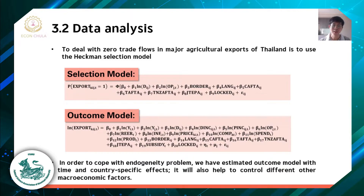This approach involves two steps. The first step, the selection model, is used to identify a set of trade clauses related to the decision of being engaged in export markets. The second step, the outcome model, includes the Inverse Mills ratio calculated from the first step, allowing us to take into account the possibility of positive sample selection bias. In order to address the endogeneity problem, we estimated the outcome model with time and country fixed effects to control for different macroeconomic factors.